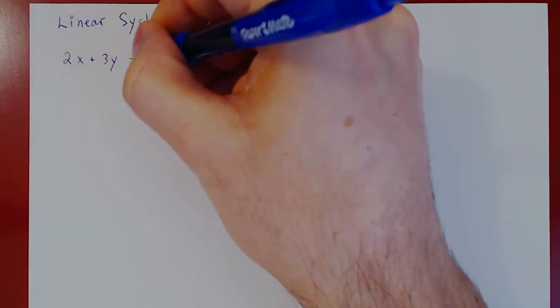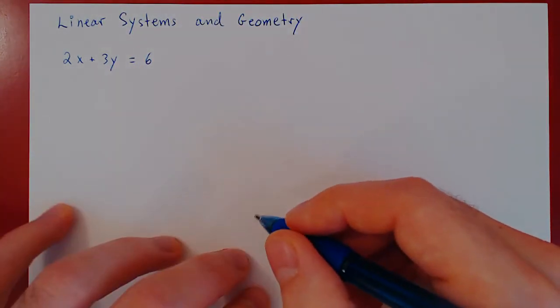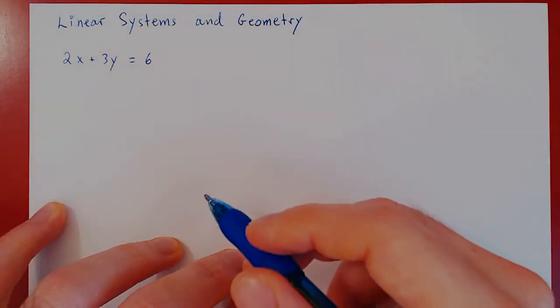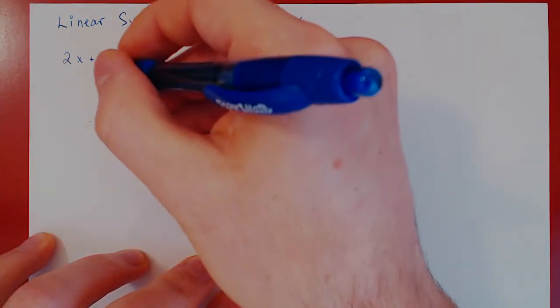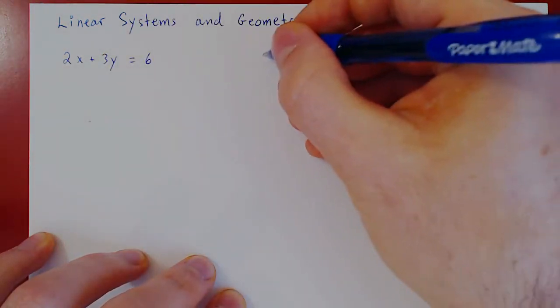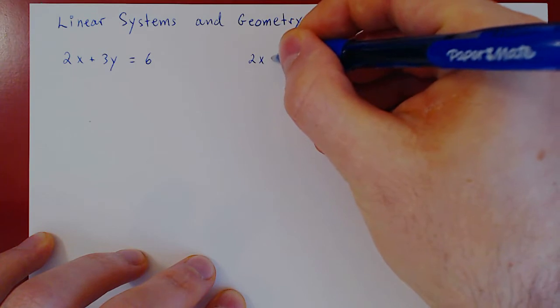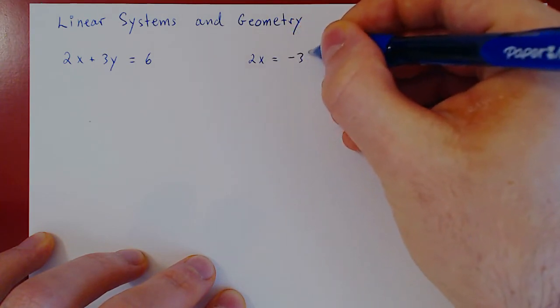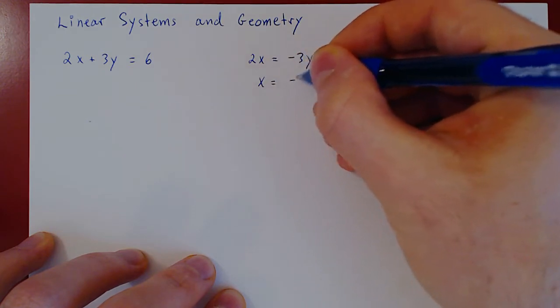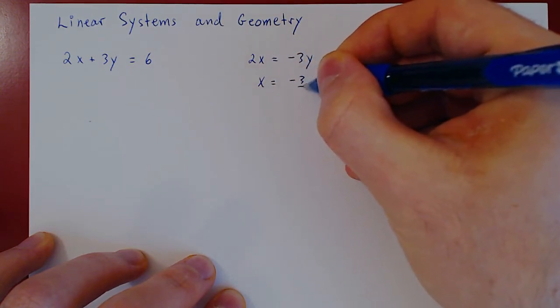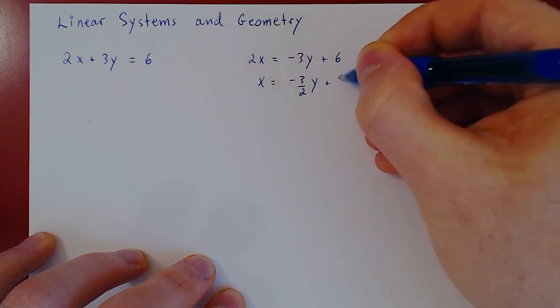Take the following equation: 2x plus 3y equals 6. Let's first algebraically solve this linear equation. We will isolate for x, and so 2x equals negative 3y plus 6 divided by 2, giving x equals negative 3 over 2 times y plus 3.